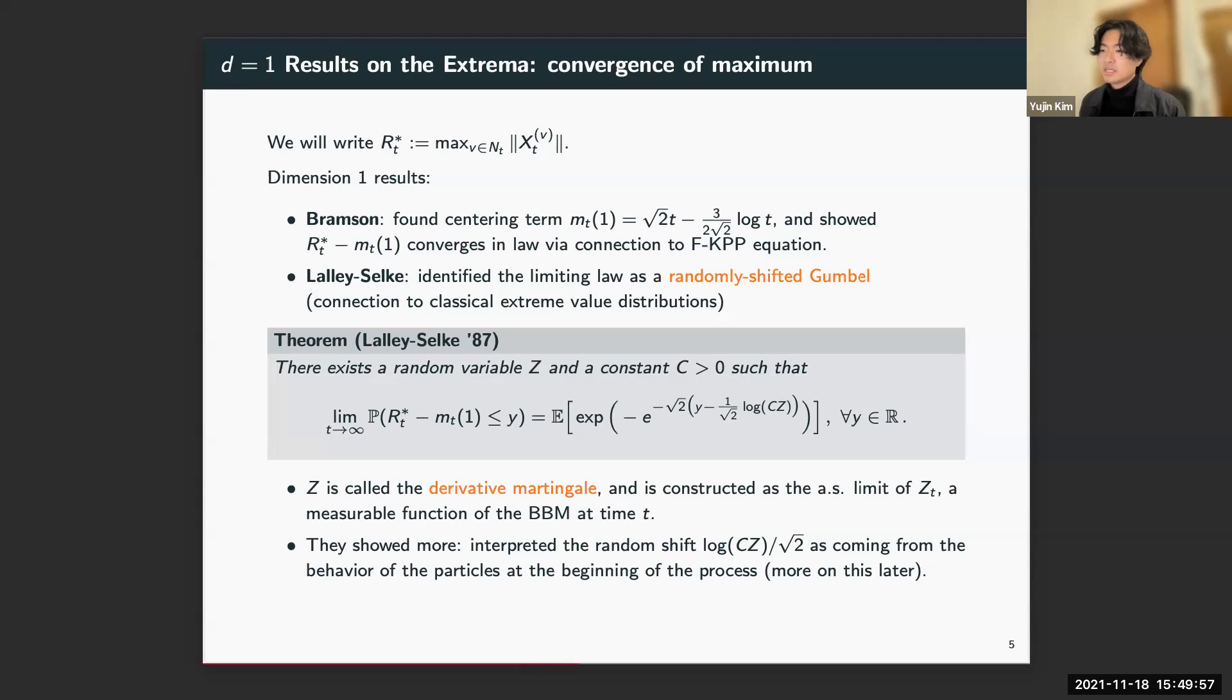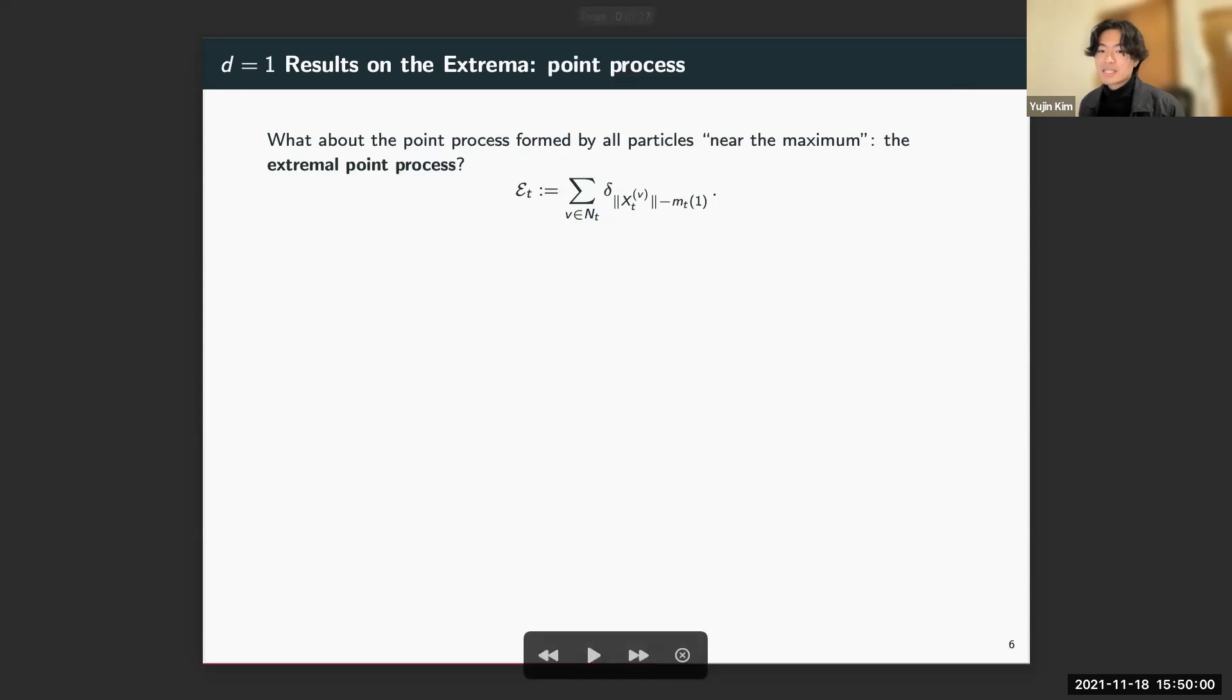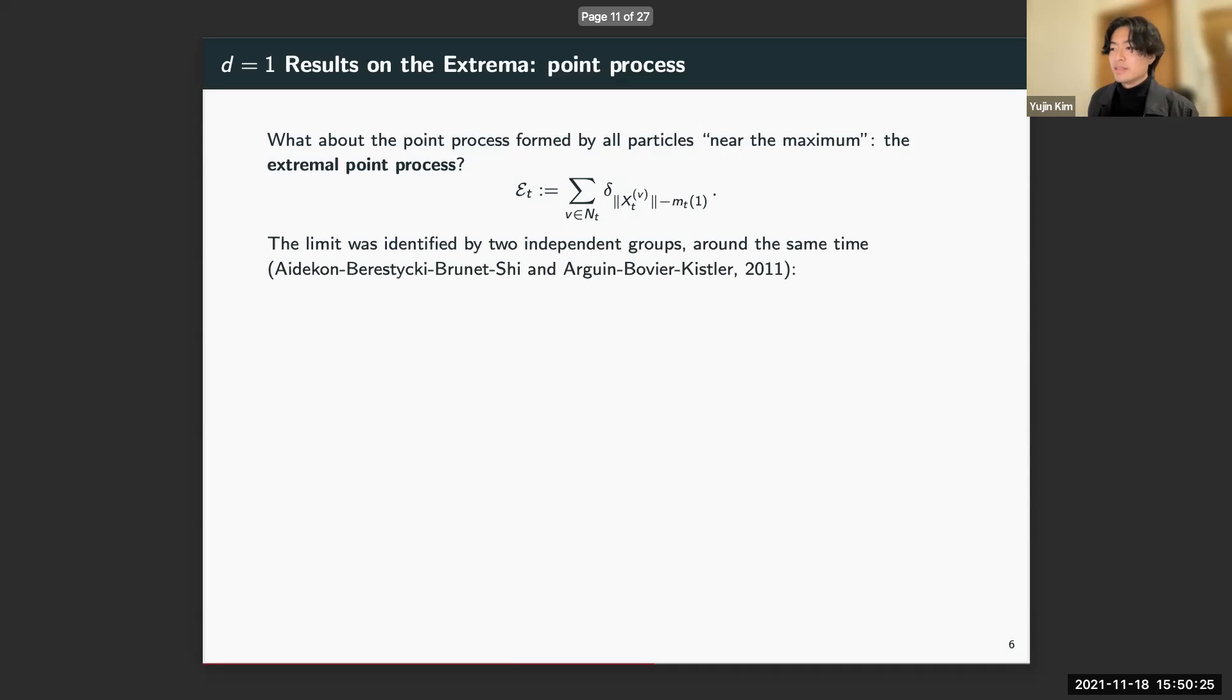The next question to ask is: what about the extremal point process? Let's take the point process of norms recentered by m_t^(1), the centering for the maximum. Almost all the points in E_t will be sent to -∞, so the only points that are retained are those that stay within constant order of the maximum. This limit was identified independently by these two groups listed here on the screen, and both describe the limit as a randomly shifted decorated Poisson point process.